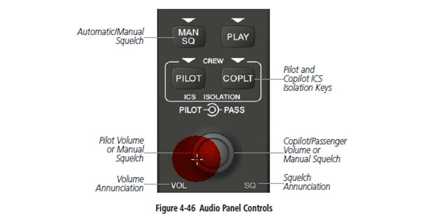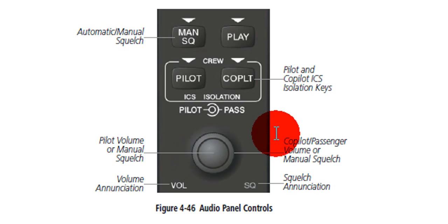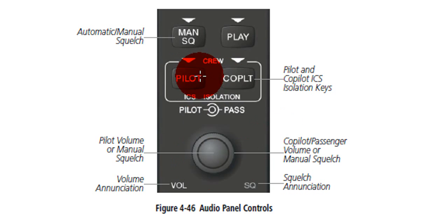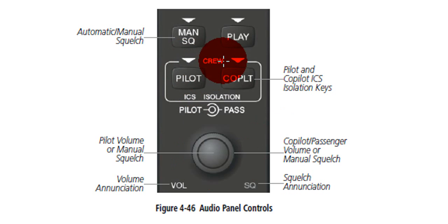The first step is to verify the pilot and co-pilot enunciator lights are extinguished, which are these two lights here. When they're off, the little white light above them in the diamond shape will be gone.